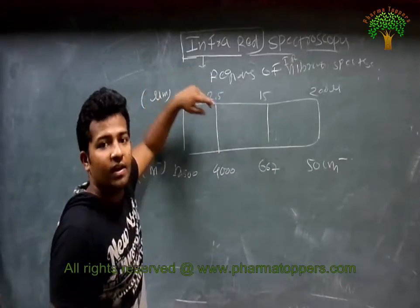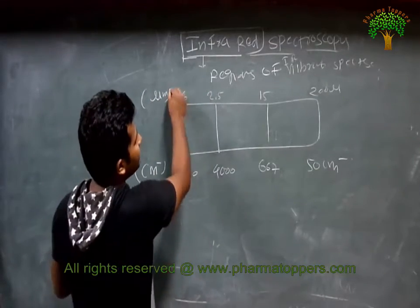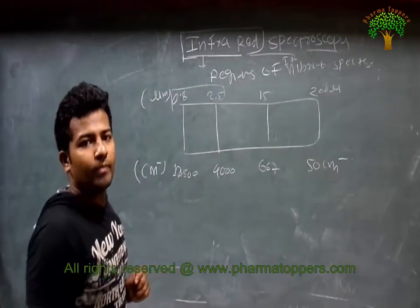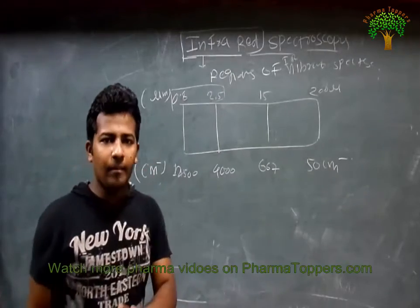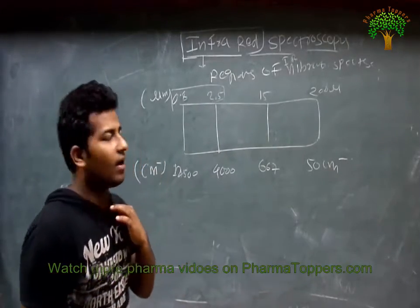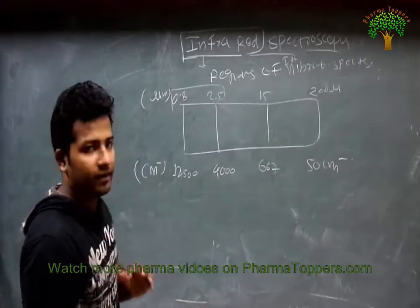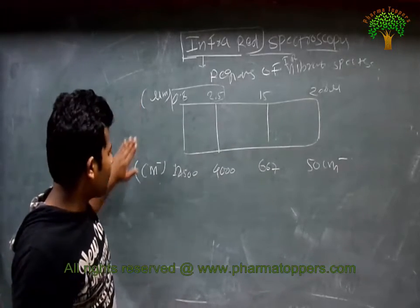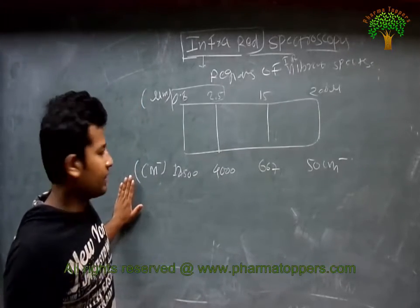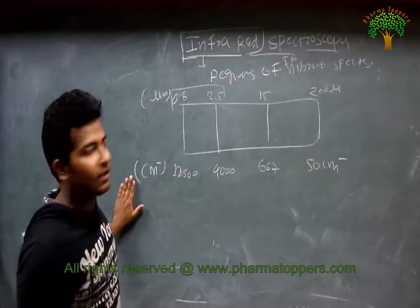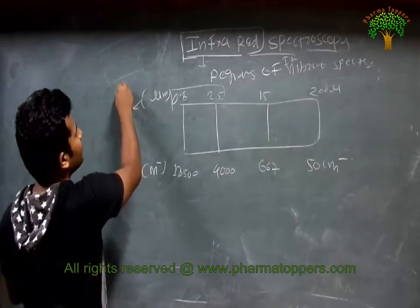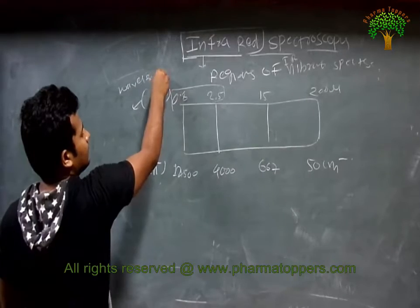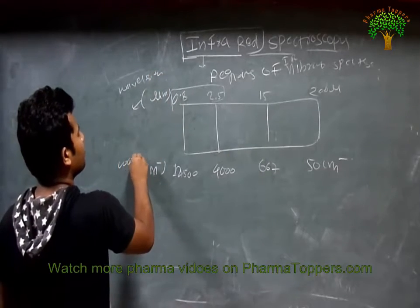What are the ranges for each region? The range is 0.2 to 2.5 microns. Remember, the unit of IR is expressed in micrometers or in the case of wavenumber. This is the unit for wavelength, and this is the unit for wavenumber.